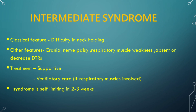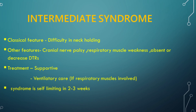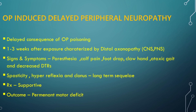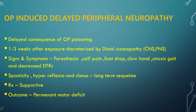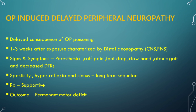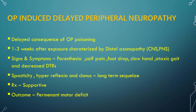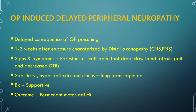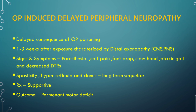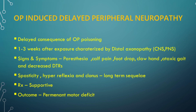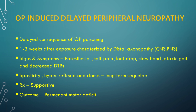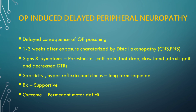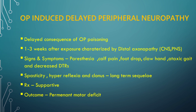Intermediate syndrome is usually self-limiting and resolution occurs in 2–3 weeks. Delayed peripheral neuropathy is a long-term consequence of organophosphate poisoning, occurring 1–3 weeks after exposure and characterized by distal axonopathy. There is Wallerian-type degeneration of axons and myelin of long nerve fibers of both central and peripheral nervous systems. Signs and symptoms include paresthesia, calf pain, ataxic gait, and decreased deep tendon reflexes. Weakness of distal limb muscles may present with foot drop and claw hand. In later stages, the patient develops spasticity, hyperreflexia, and clonus. As there is no definitive specific therapy, permanent motor deficit is the usual outcome.